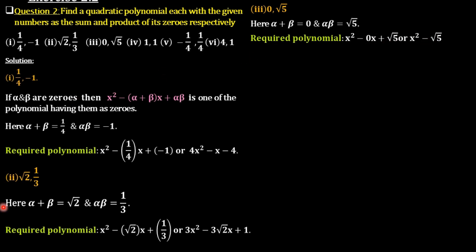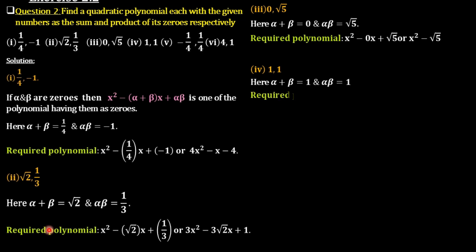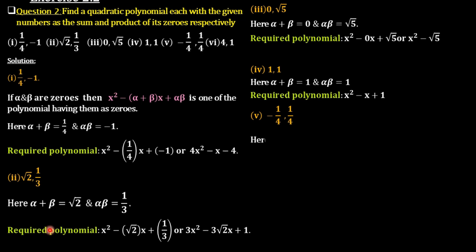Fourth question: 1 comma 1. Alpha plus beta equals 1 and alpha·beta equals 1. The required polynomial is x² minus x plus 1. Next question: negative 1/4 comma 1/4. Alpha plus beta equals negative 1/4 and alpha·beta equals 1/4.